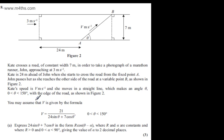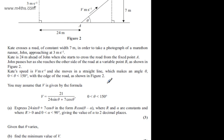You may assume that v is given by the formula v equals 21 over 24 sine theta plus 7 cos theta where theta is between 0 and 150 degrees. In part A, we're asked to express 24 sine theta plus 7 cos theta in the form R cos of theta minus alpha where R and alpha are constants and where R is greater than 0 and alpha is between 0 and 90 degrees, giving the value of alpha to 2 decimal places.